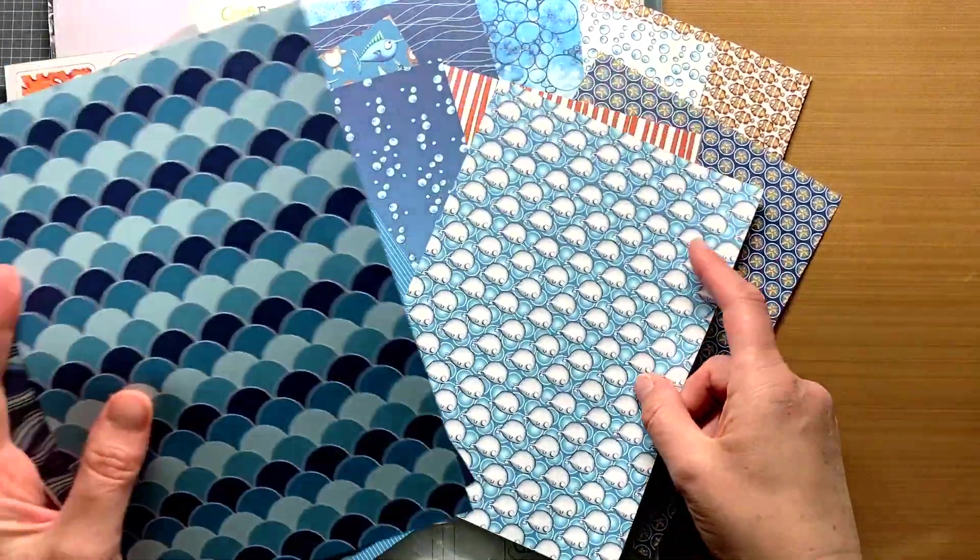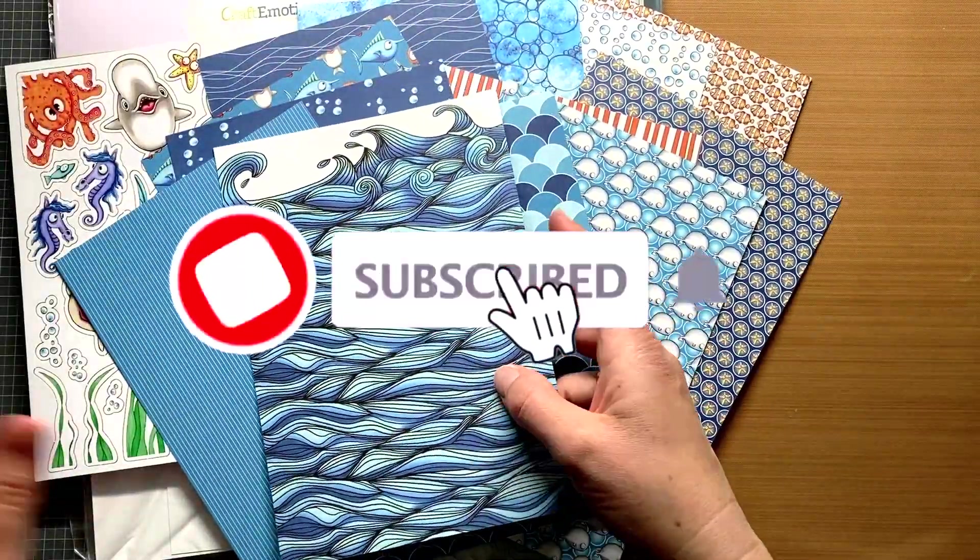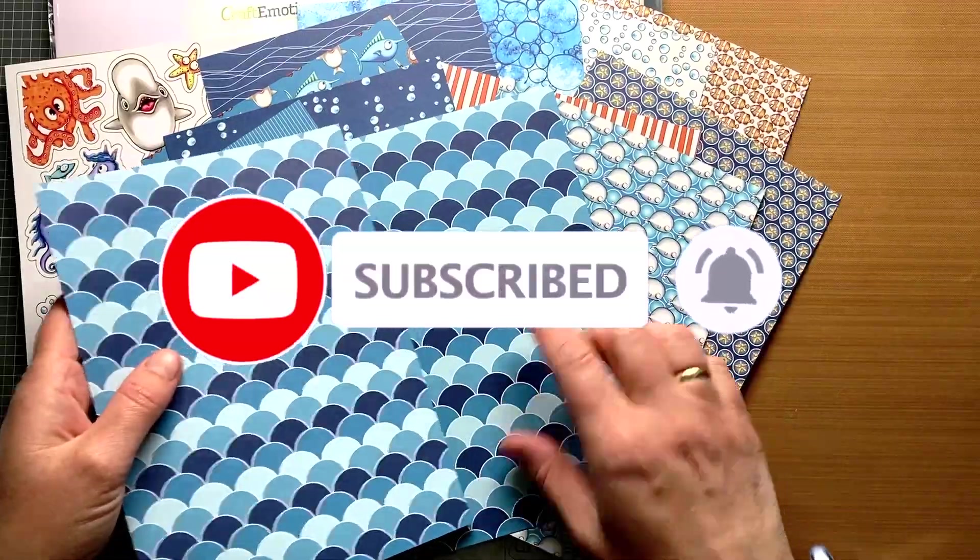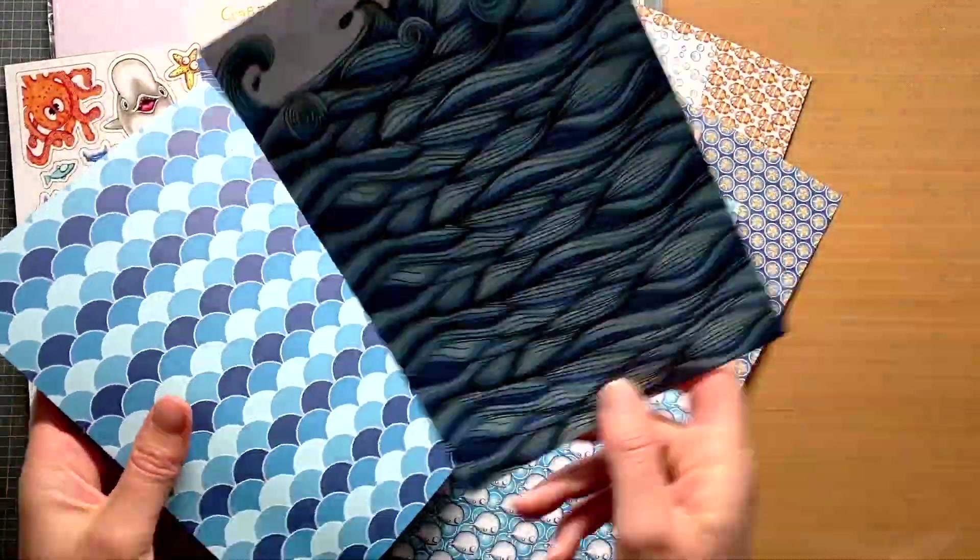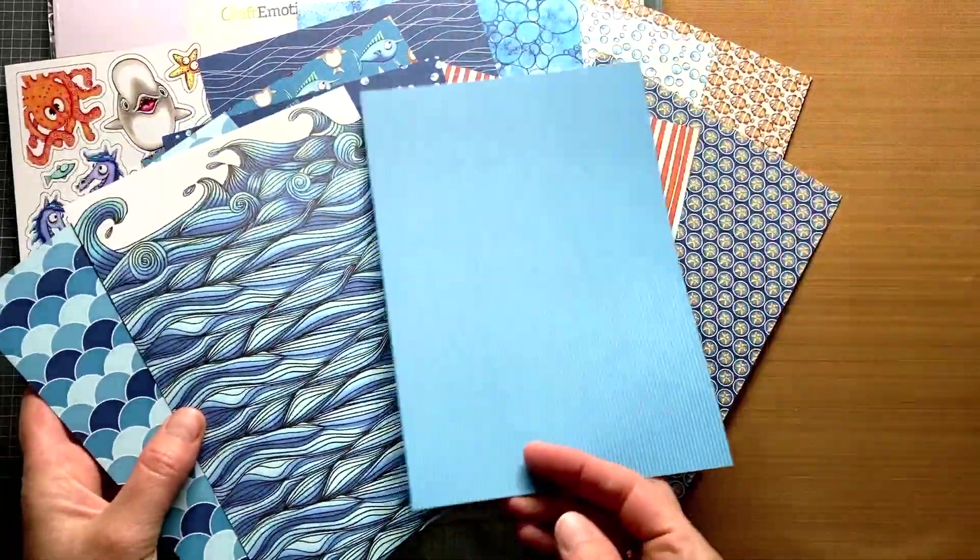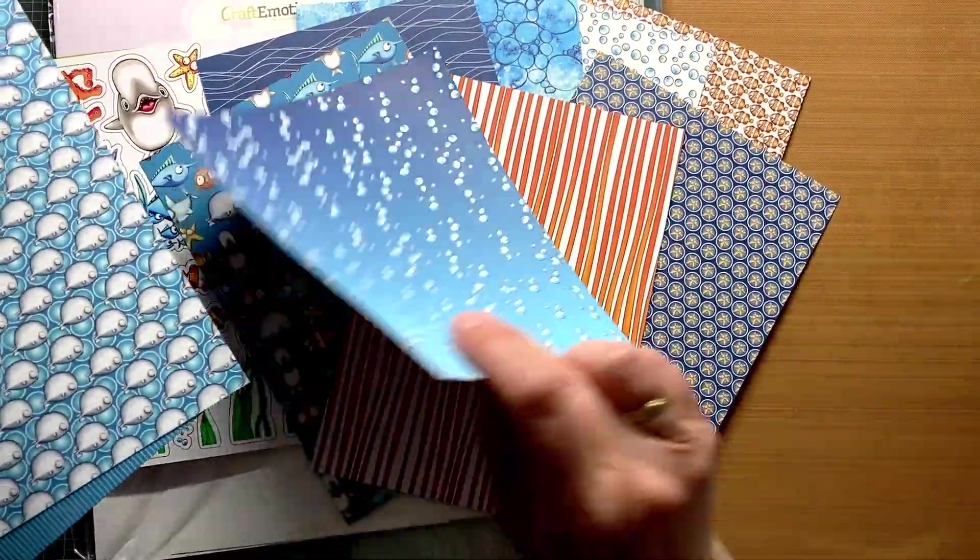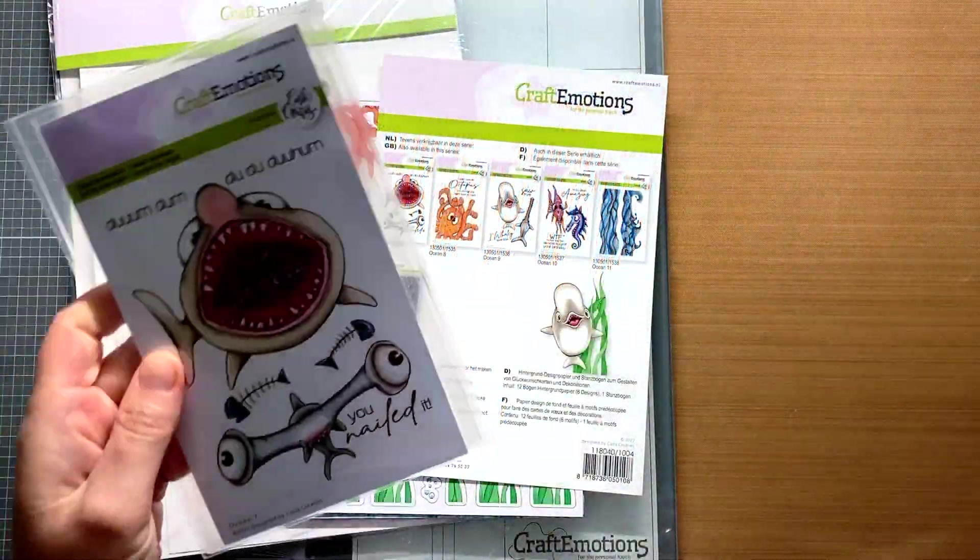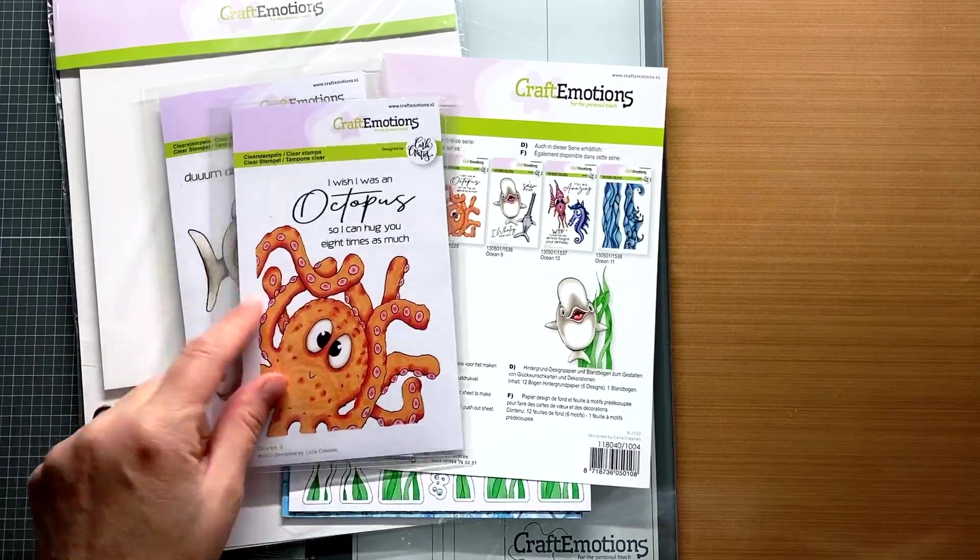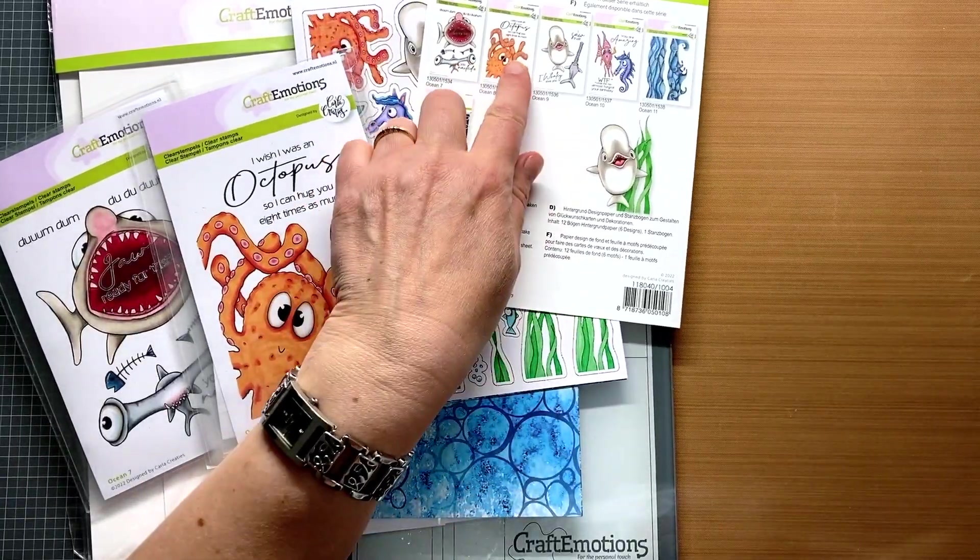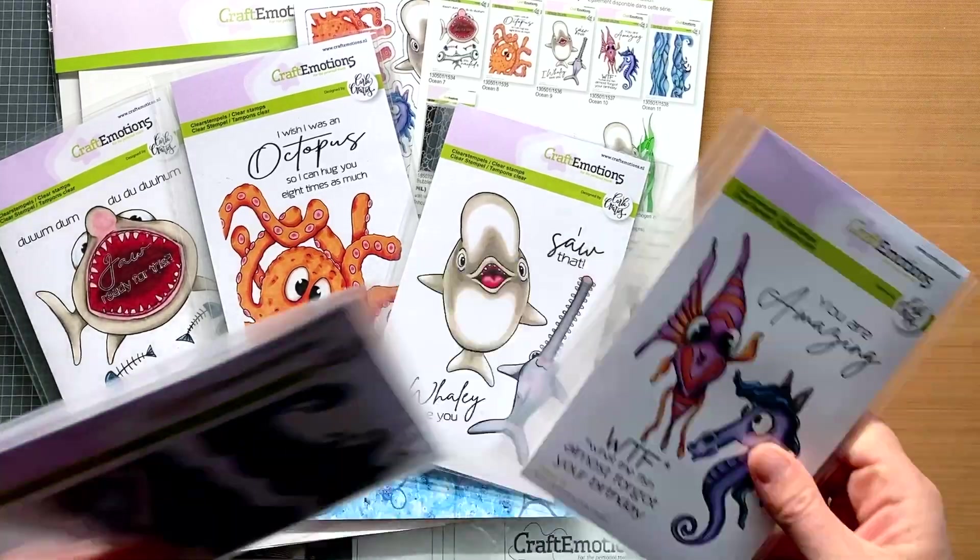By the way, in that video you can also see that the never-ending card I am going to make today is also on the front page of Craft Emotions annual catalog. Here you can see each set is double-sided and there are 2 of each, a total of 12 sheets. Some of the figures are also on the stamps released by Craft Emotions. Here I have Ocean 7 and 8, and this is Ocean 9 and 10.